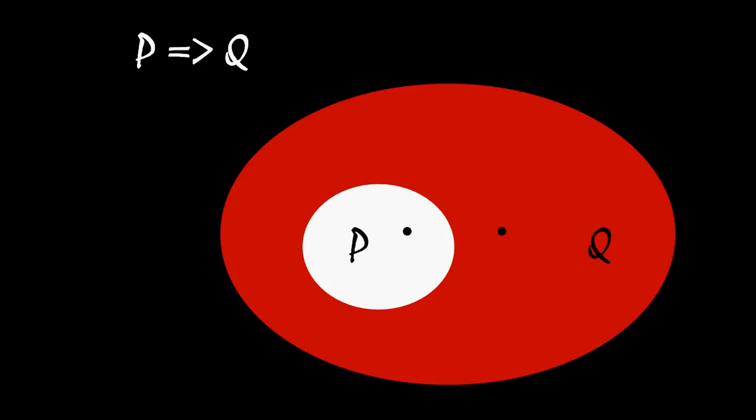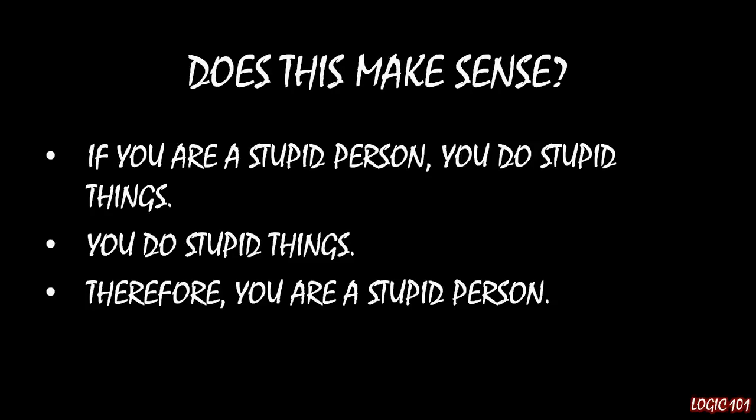Maybe some verbal arguments will help you understand this point more clearly. Think about this argument — does it make sense? If you are a stupid person, you do stupid things. You do stupid things. Therefore, you are a stupid person. This has the same logical structure as affirming the consequent, but it's not right.